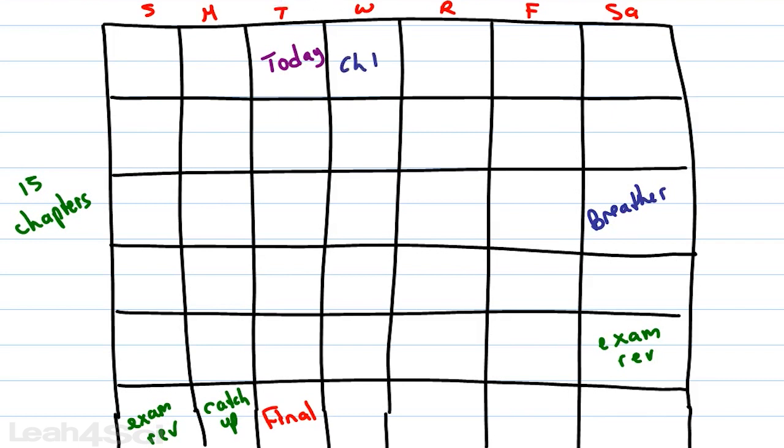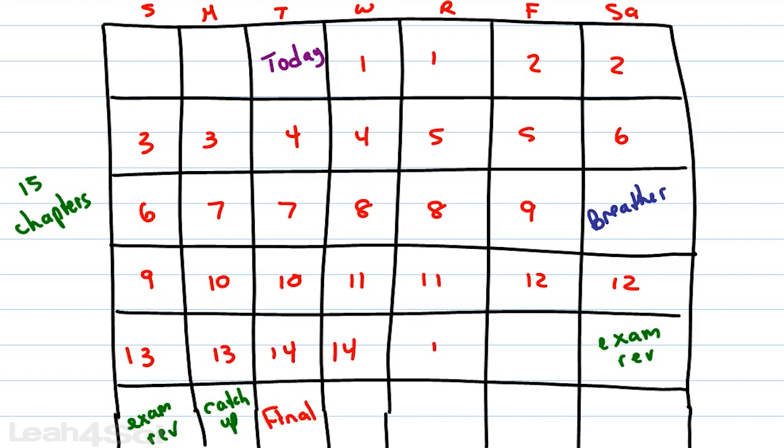So let's go ahead and break this up. We'll do chapter one, I'll just put in numbers here so the number will represent the chapter. Chapter one, one in review. Two, two in review. Three, three in review. Four, five, six, seven, eight, nine, breather, nine again. 10, 11, second day for 11, 12, 13, 14, 15, and here we go.